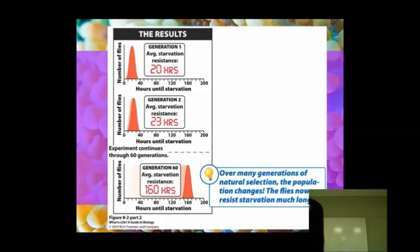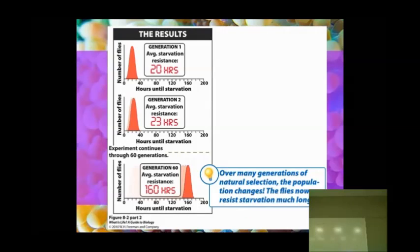What they did then was they repeated this experiment through 60 generations. After the first round of fruit flies that survived about 20 hours without food, then in the next set, in generation 2, the average starvation resistance was 23 hours. After they did this 60 more times, where they would take away the food, wait until 80% of the flies had died, and then let the ones that survived the longest reproduce, after 60 generations, they were able to come up with fruit flies that could survive an average of 160 hours until they would starve.